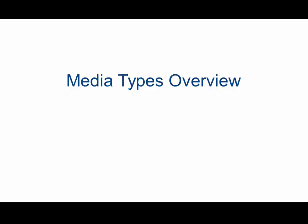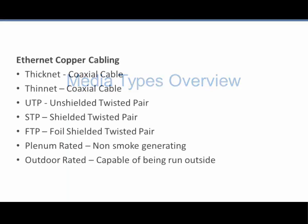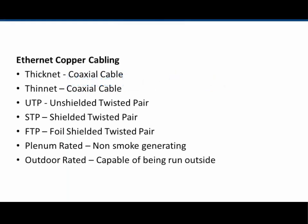Media types overview: Ethernet copper cabling. Two of the earliest standards of Ethernet copper cabling were nicknamed thick net and thin net. They both used coaxial cable, which was expensive and difficult to pull or manage in wiring networks.